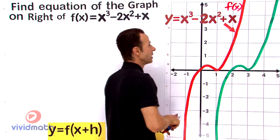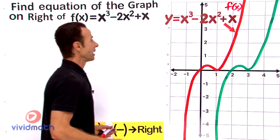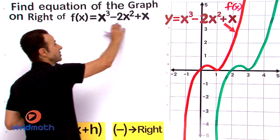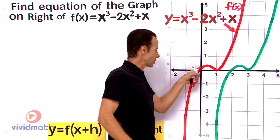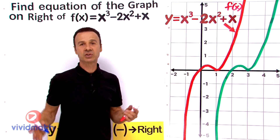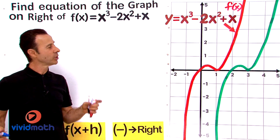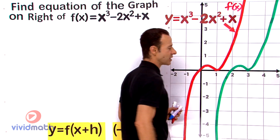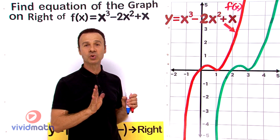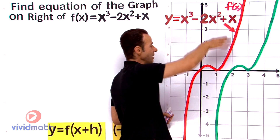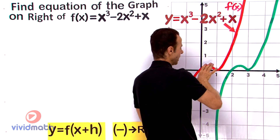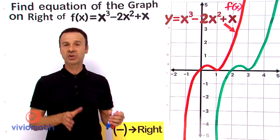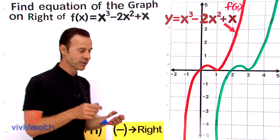What we want to find is this function on the right, and we haven't been given an equation for it - all we have is the equation of the function on the left. If we take a closer look, this function is identical to f(x) except it's moved 2 or 3 units to the right. It's the same size, same shape - just shifted to the right. So it looks like a horizontal translation moving to the right.